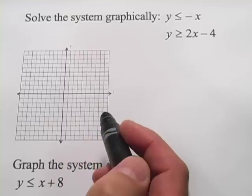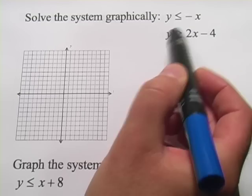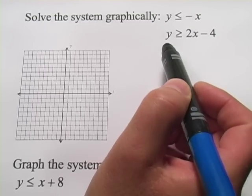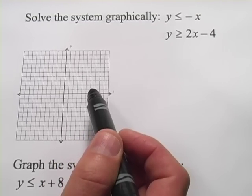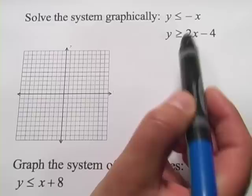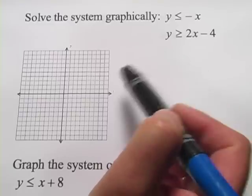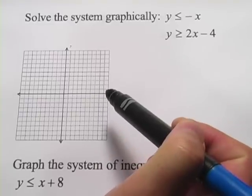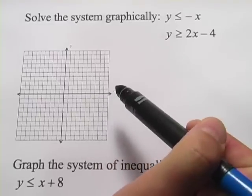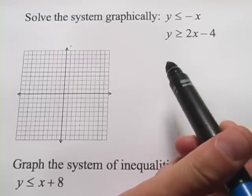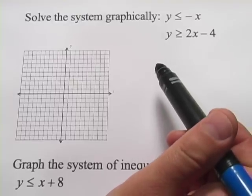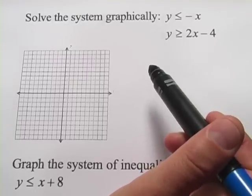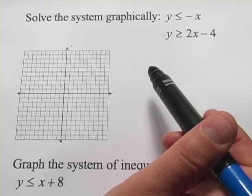In these problems, we're dealing with systems of inequalities. So we've got more than one inequality here, and we're solving them graphically. What that means is we're going to graph each of these inequalities, and then we're going to look at where the overlap is and create a shaded region. And that region is the solution. It's every possible pair of coordinates that could solve this system of inequalities.